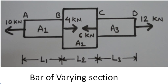You can see a diagram of a bar of varying cross-section area. We are considering a bar AD which has three sections: section AB with length L1 and cross-section area A1, section BC with cross-section area A2 and length L2, and section CD with length L3 and cross-section area A3.